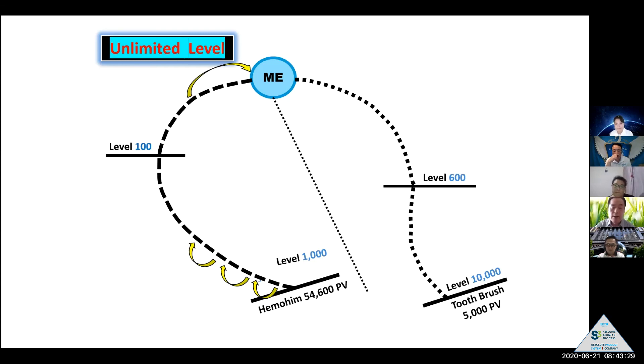And 1,000 down level Hemohim, someone in Australia purchased your member Hemohim one box, 54,600. Then these two members purchased today the Hemohim - 109,200, 100% come up to you.